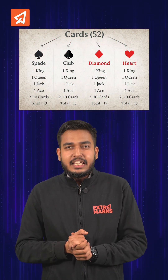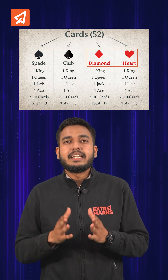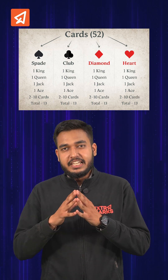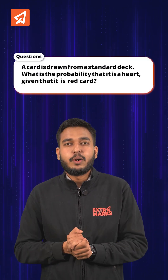As you can see, there are four suits in the deck, each having 13 cards. Two suits — spade and club — are black in color, and two suits — diamond and heart — are red in color. In each set of 13 cards, there are three face cards: king, queen, and jack.